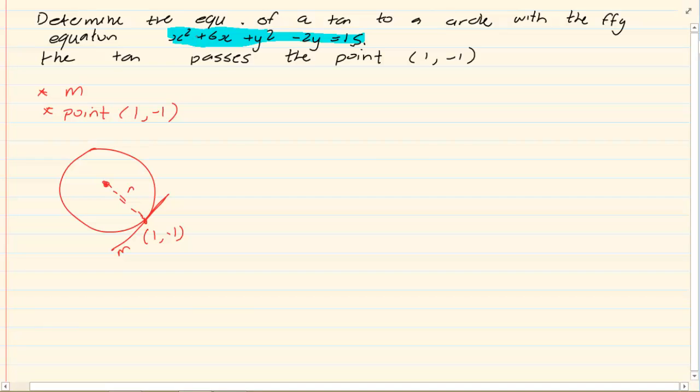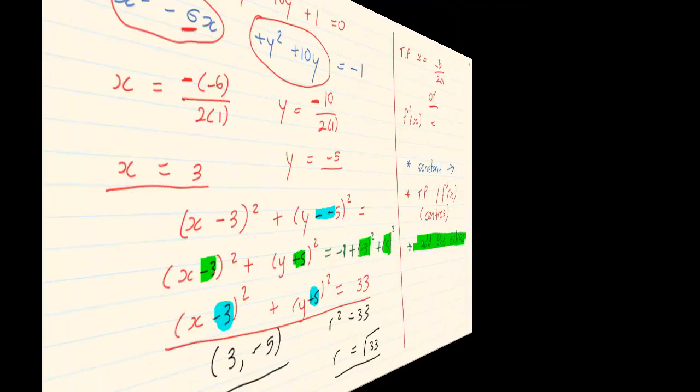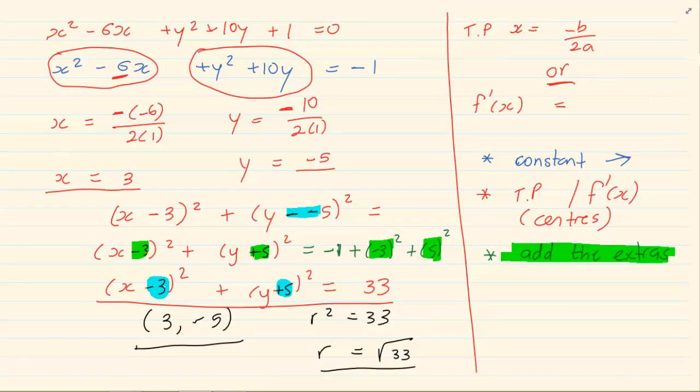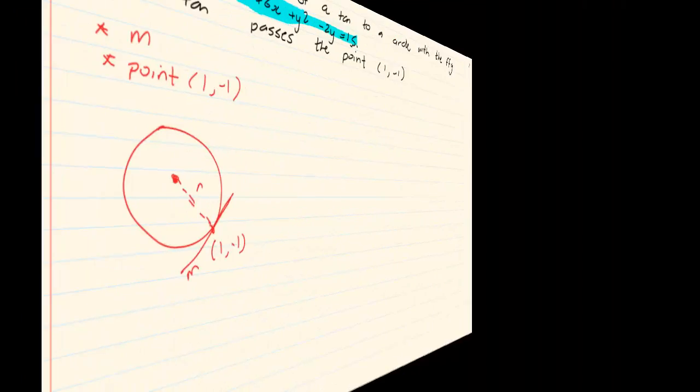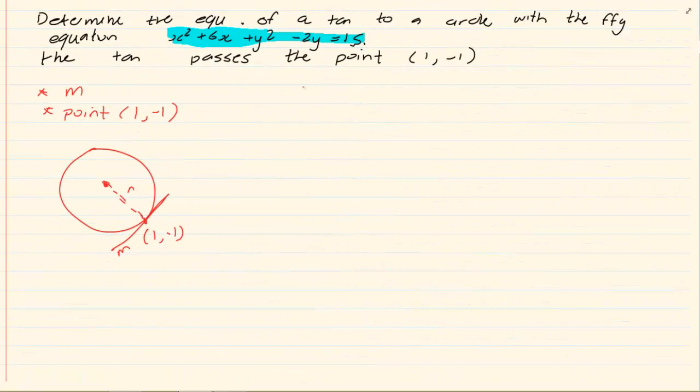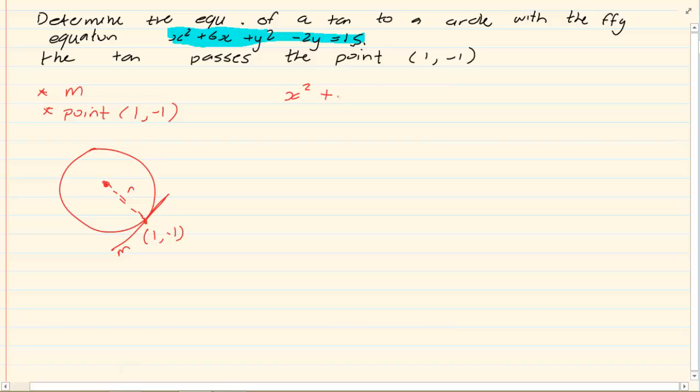This was done in our previous video where the circle was not 0, 0. And you had to change it from a standard point to a center equation. We had done this video before. What did we decide? That when we have the equation X squared plus 6X plus Y squared minus 2Y is equal to 15. To get the center, we can do derivative or we can do turning points. Where the turning point is X is equal to minus B over 2A.